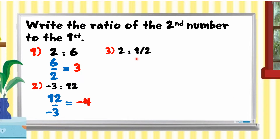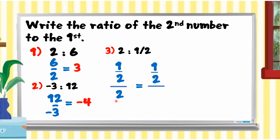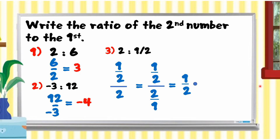Example 3: 2 is to 1 half. We have the second number, which is 1 half, divided by 2. We rewrite 2 as a fraction with an invisible denominator of 1, giving us 1 half divided by 2 over 1. That is equal to 1 half times the reciprocal of 2 over 1, which is 1 over 2. Multiplying numerator times numerator over denominator times denominator, we have 1 times 1 over 2 times 2, which is 1 over 4.